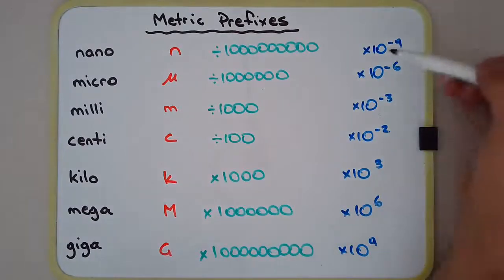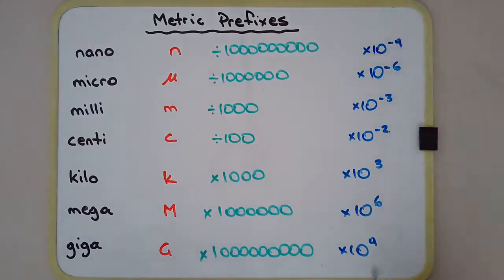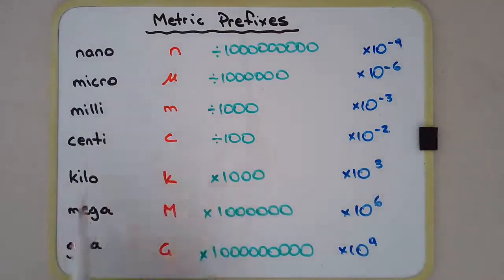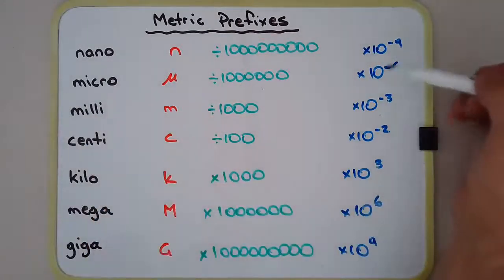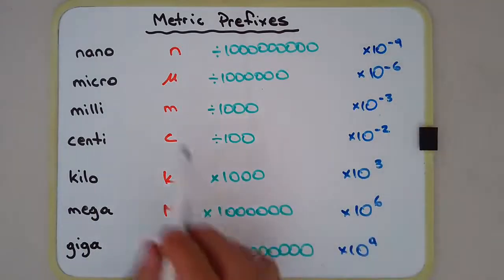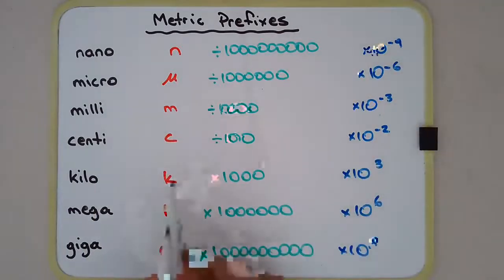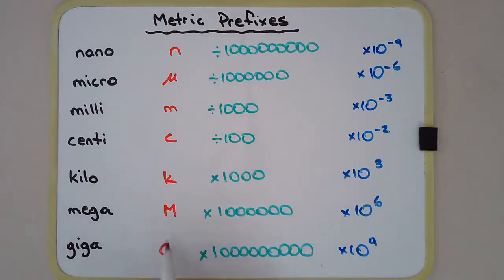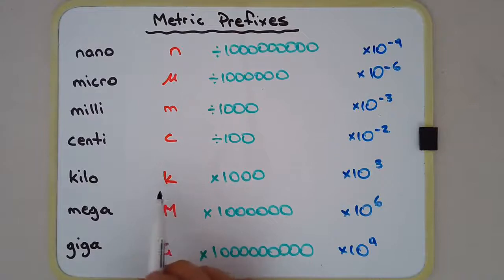Instead of times 10 to the negative 9, giga is times 10 to the 9 with a positive exponent. Same thing with micro and mega — micro is times 10 to the negative 6, mega is times 10 to the 6. Notice also that mega and giga use capital letters for their symbols.